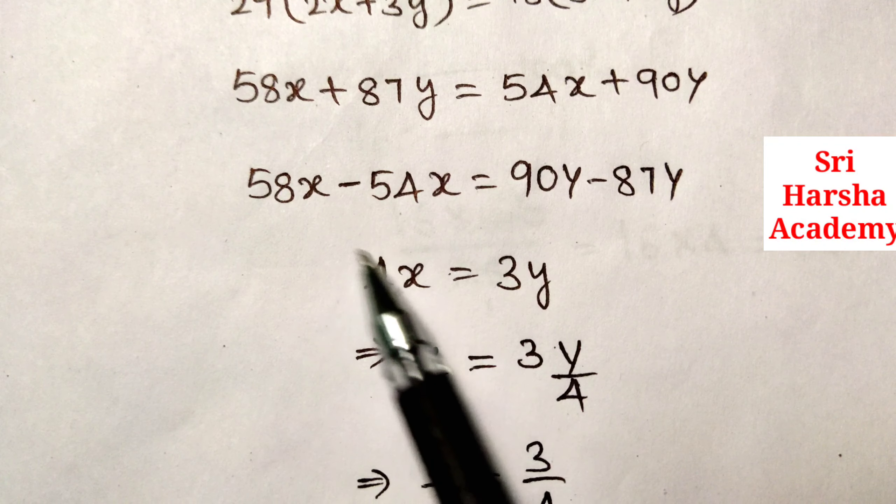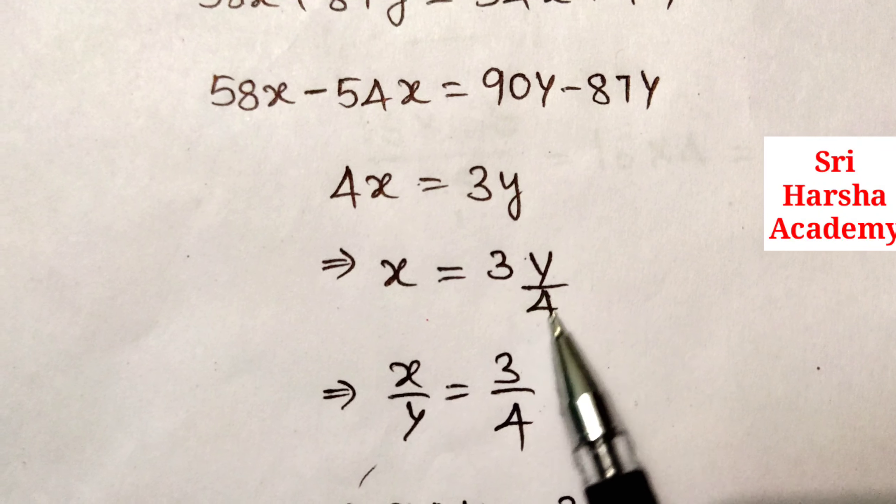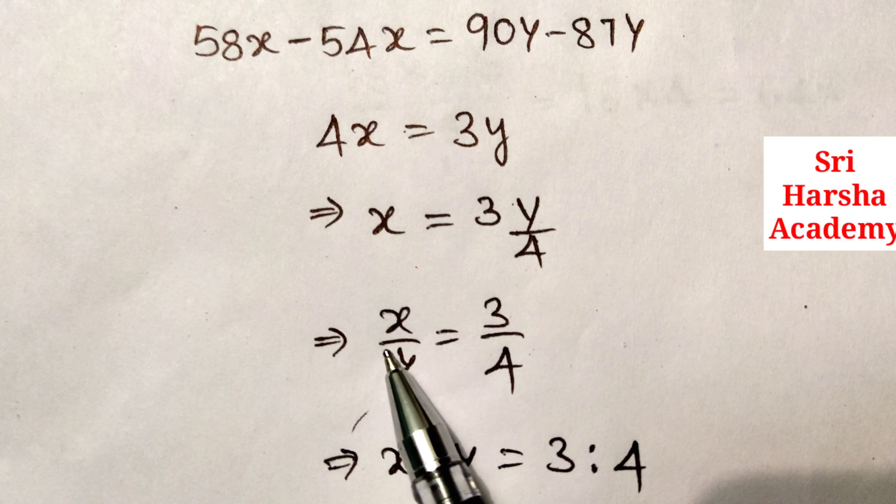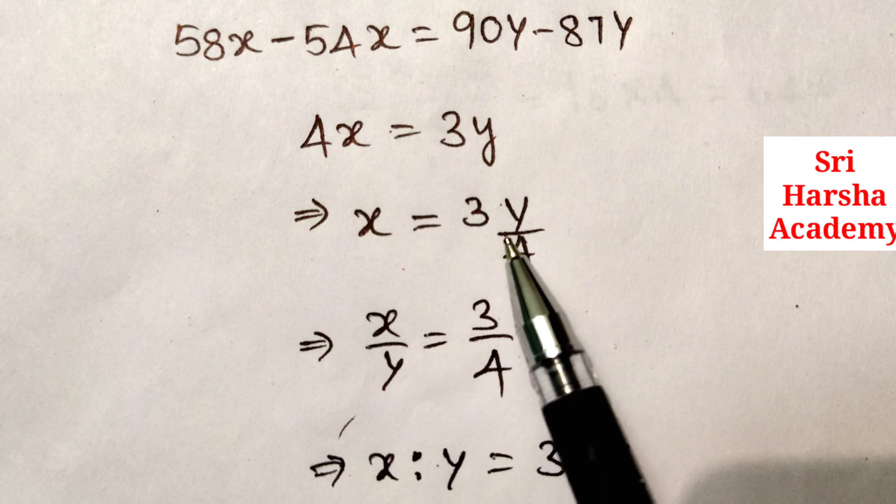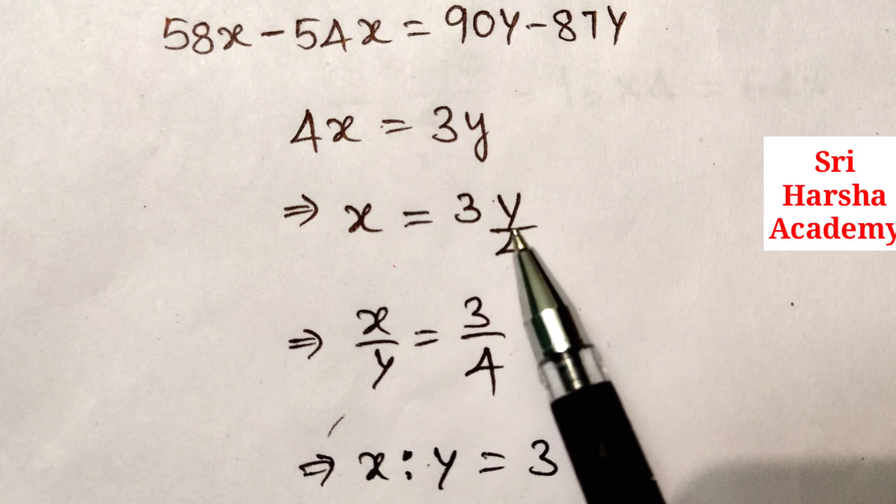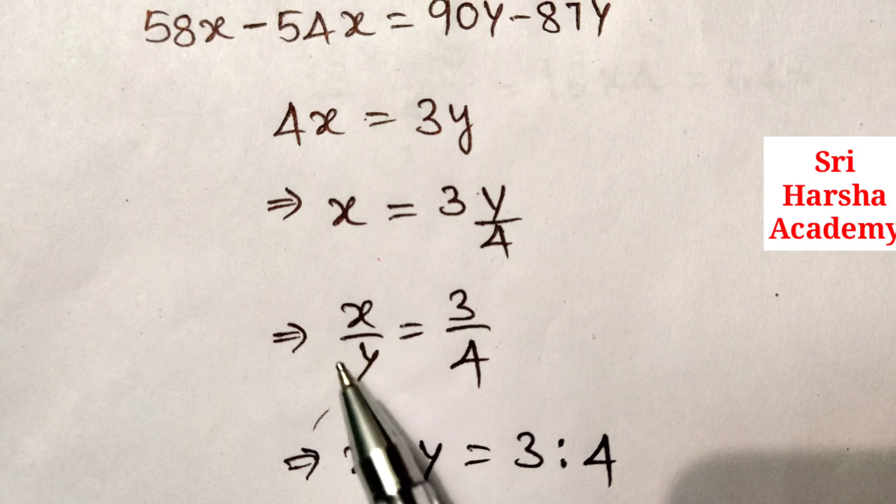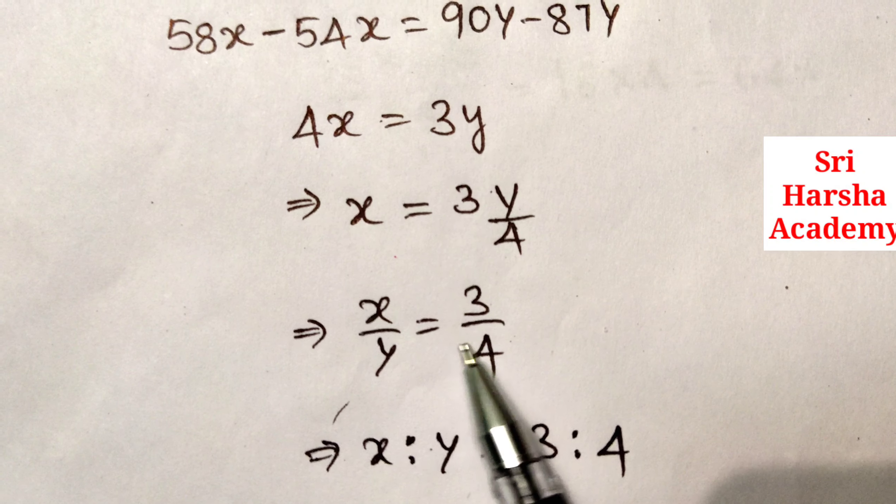Here, 4 is transferred to right side, then x is equal to 3y by 4, and here y is transferred to left side because we have to calculate x is to y ratio. Then we get x by y is equal to 3 by 4.